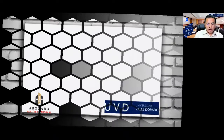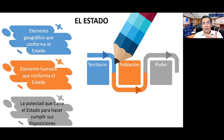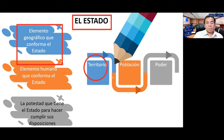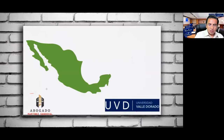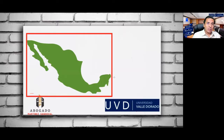Empecemos entonces con el estado y los elementos que lo conforman. Primer punto: tenemos el territorio, elemento geográfico que conforma al estado. Recuerden que ya lo revisamos. Es donde el estado va a ejercer su poder y hacer cumplir sus disposiciones. El territorio del estado tiene más de un millón novecientos mil kilómetros.